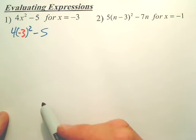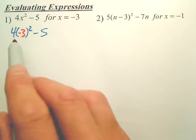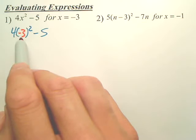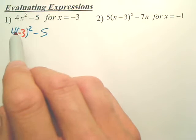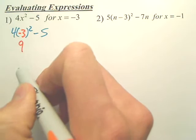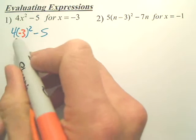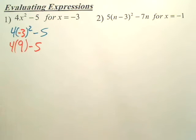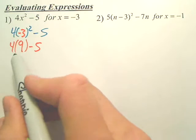Now I do order of operations. Order of operations: parentheses, where there's nothing inside to do. Exponents - oh, negative 3 squared. 9. Bring down the 4, bring down the minus 5.